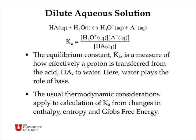In dilute aqueous solution, an acid can react with water to donate its proton to the water molecule, making hydronium ions H3O+ and A⁻, which is the conjugate base of the acid HA. There is an equilibrium for this reversible reaction, and the equilibrium constant is given the symbol Ka, equal to the hydronium ion concentration times A⁻ divided by the concentration of HA, the undissociated but dissolved acid. Ka is a measure of how effectively a proton is transferred from the acid to the water.